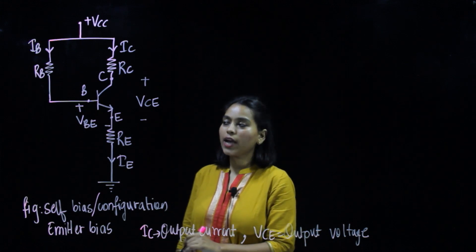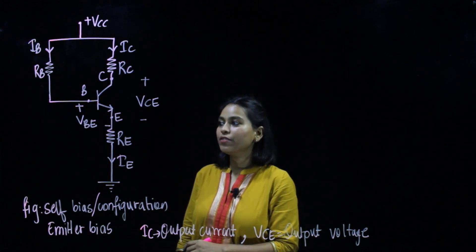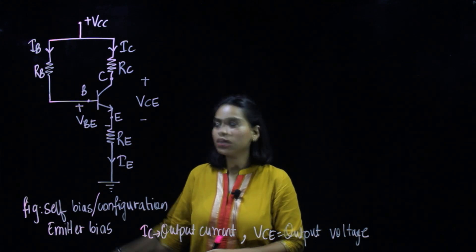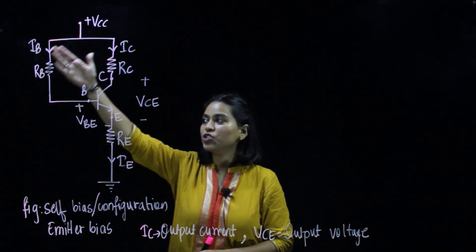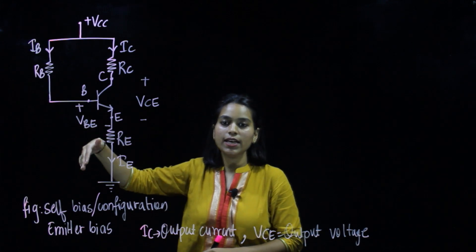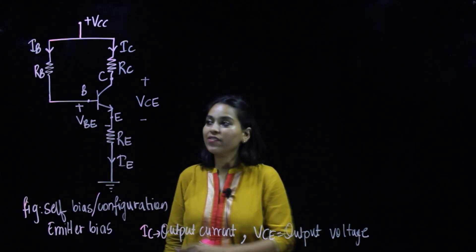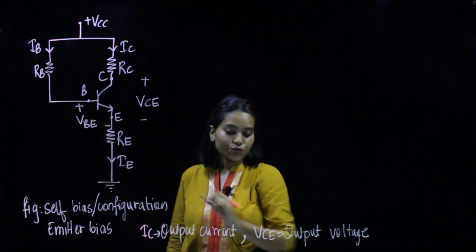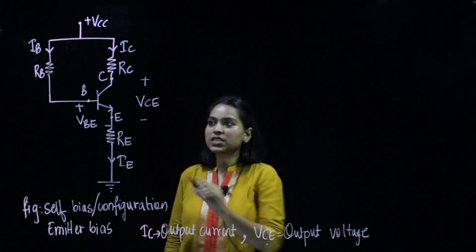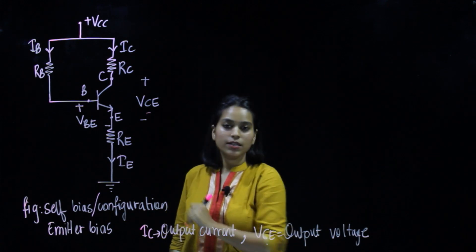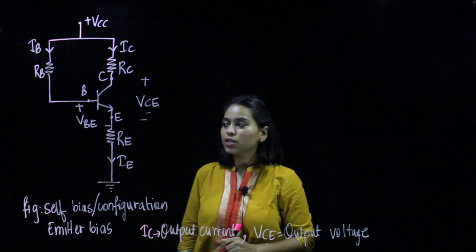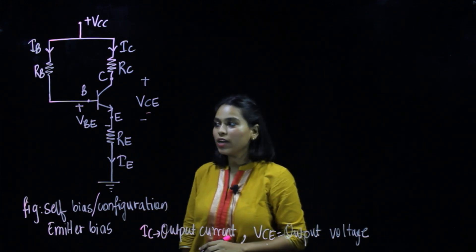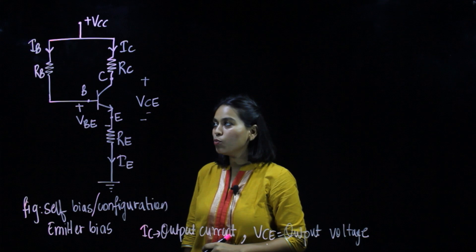To find IC we will be applying KVL on the input loop, and we will be applying KVL on the output loop to find out VCE. Let's begin and apply KVL in the input loop.